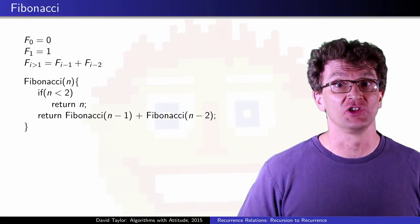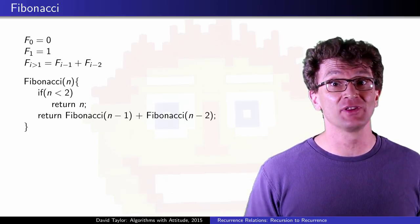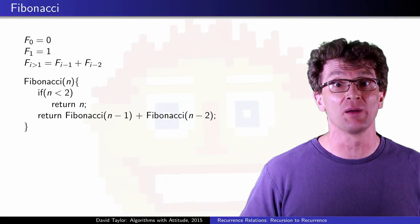So I'll start with the famous Fibonacci sequence. The zeroth number in the sequence is zero, the first is one, and after that, each number in the sequence is the sum of the previous two numbers.